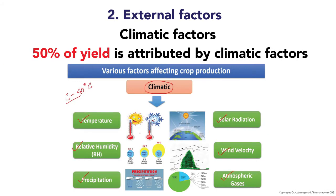The first external factor is climatic factors. Normally 50% of the yield is attributed to climatic factors. The climatic factors are temperature, relative humidity, precipitation, solar radiation, wind velocity, and atmospheric gases.